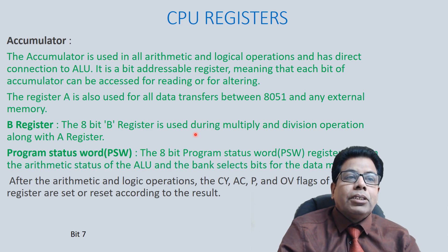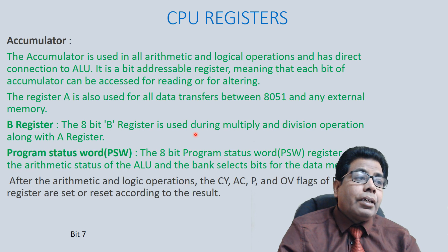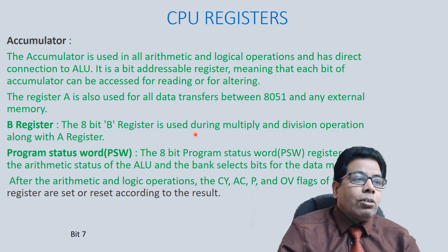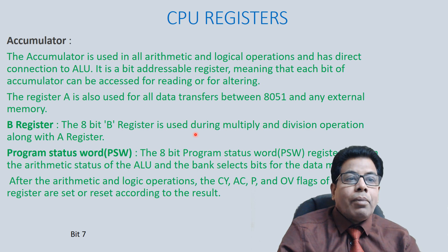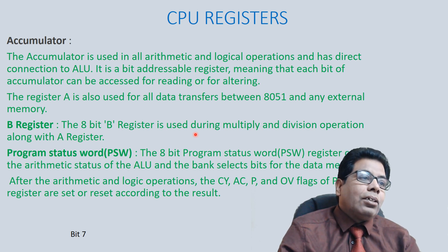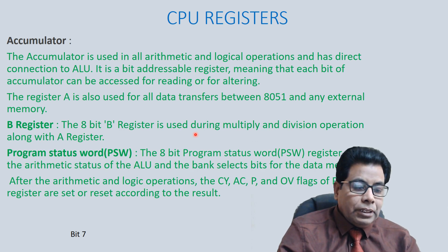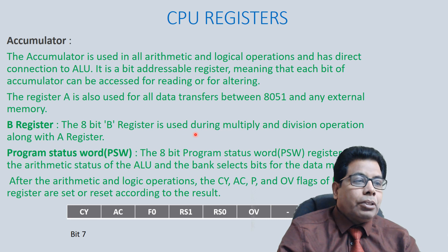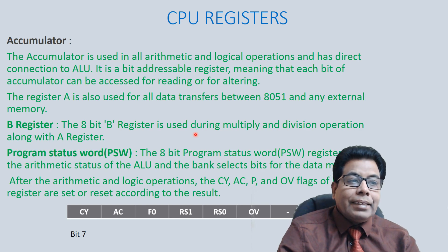The 8-bit Program Status Word (PSW) contains the arithmetic status of the ALU and bank select bits for data memory. After arithmetic and logical operations, the carry, auxiliary carry, parity, and overflow flags of the PSW register are set or reset according to the result. Bit 7 is the carry flag, then AC (auxiliary carry), F0 is the user flag, RS1 and RS0 are the register bank select bits, OV is the overflow flag, and P is the parity flag.